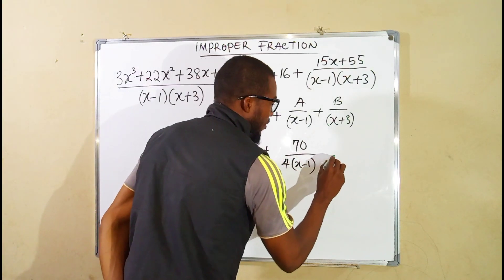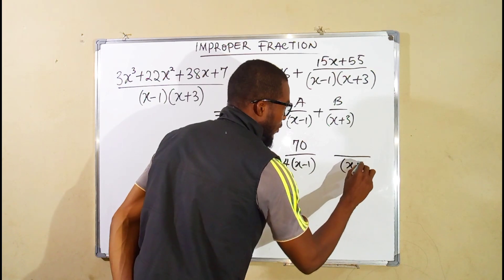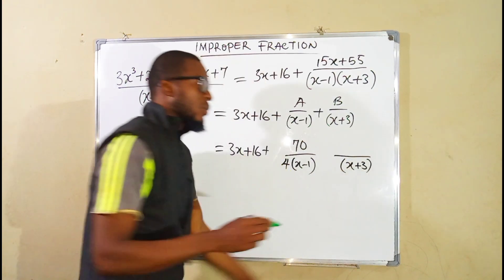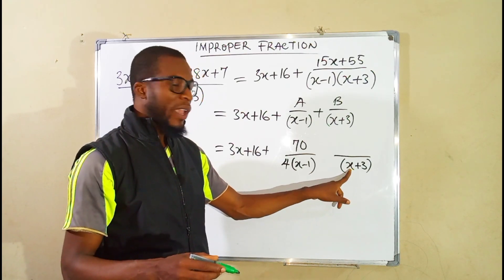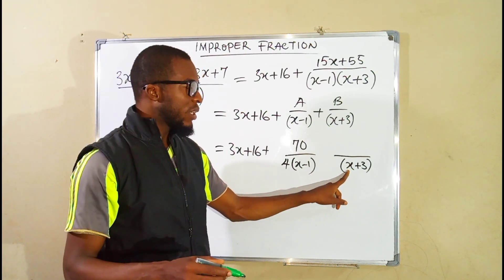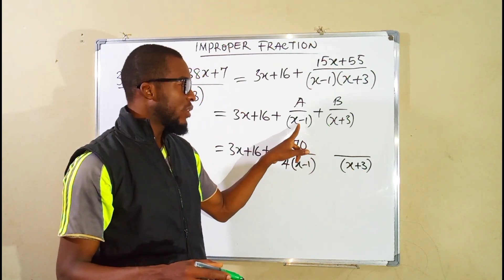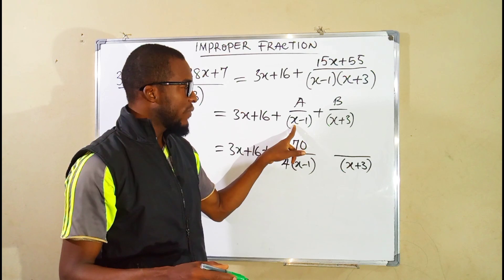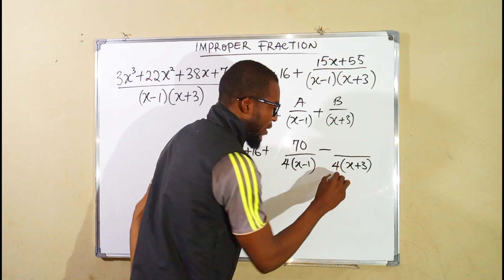Then we move to the next factor x plus 3. To transform this factor into 0, we have to set the value of x to be negative 3. Because negative 3 plus 3 is 0. But that negative 3 has to be substituted here. So we say negative 3 minus 1 is negative 4. So we have negative 4 here.